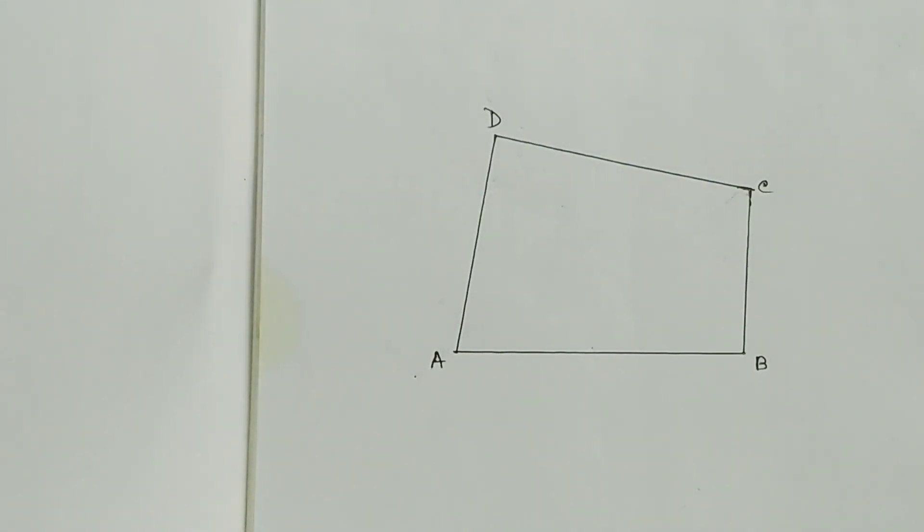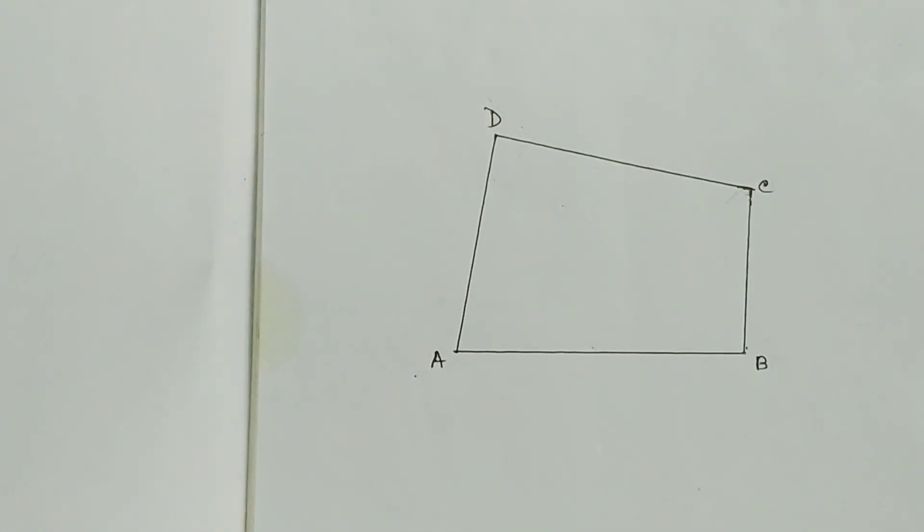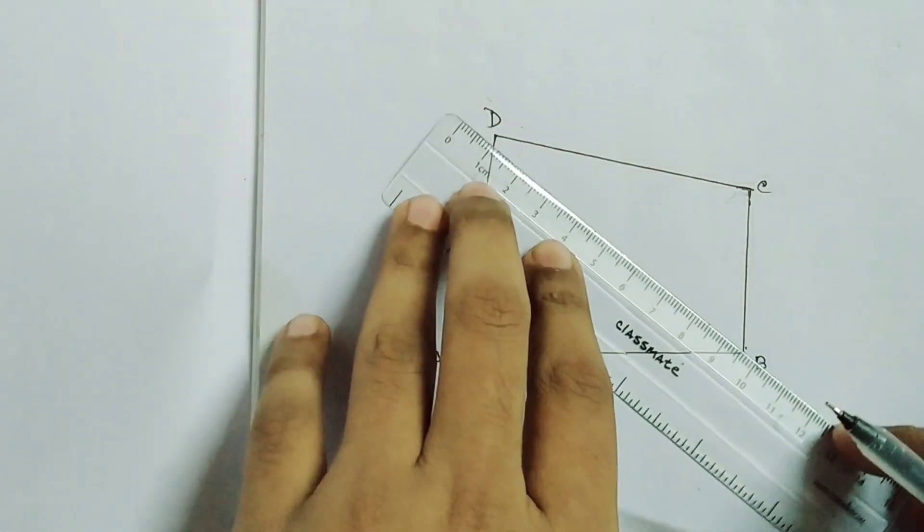Now the next thing you have to do is just draw one diagonal. You can draw the diagonal AC or you can draw the diagonal BD. I am drawing here the diagonal BD, but you can also construct this construction by drawing the diagonal AC. So I am drawing here the diagonal BD.